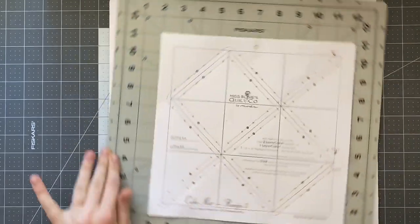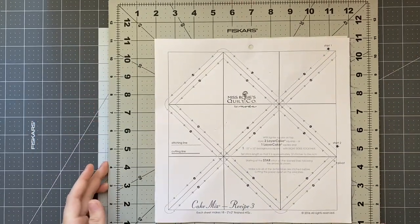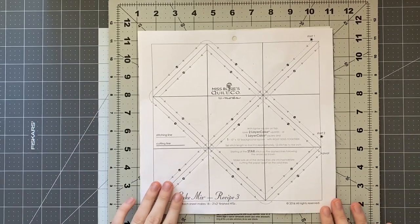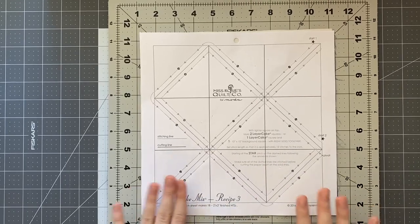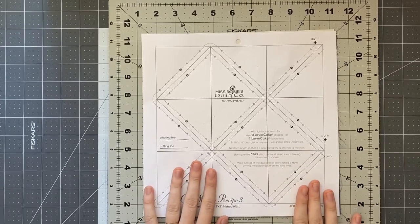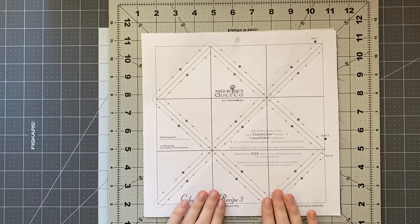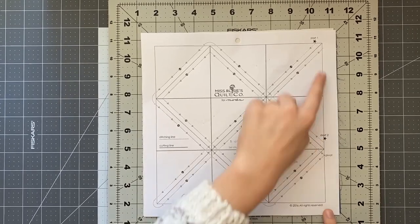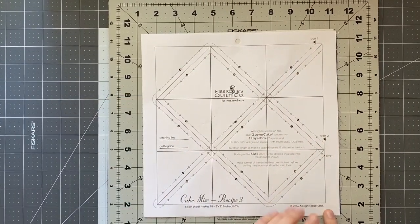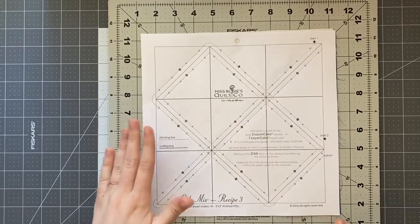and my bottom piece has a little rubber pad that helps it stick to the table and then I can just rotate it very easily so since we sewed on all of our dotted lines we're now going to cut on all of our solid lines.